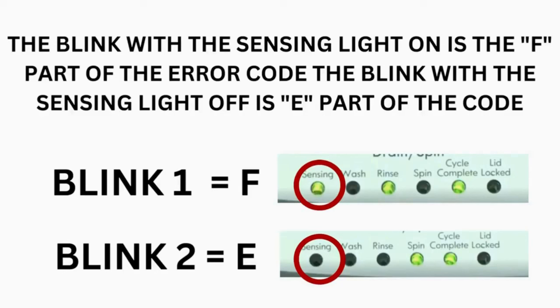Read the error codes. Error codes for the washer have 2 parts. The first is the letter F followed by a number, and the second is the letter E followed by a number as well.